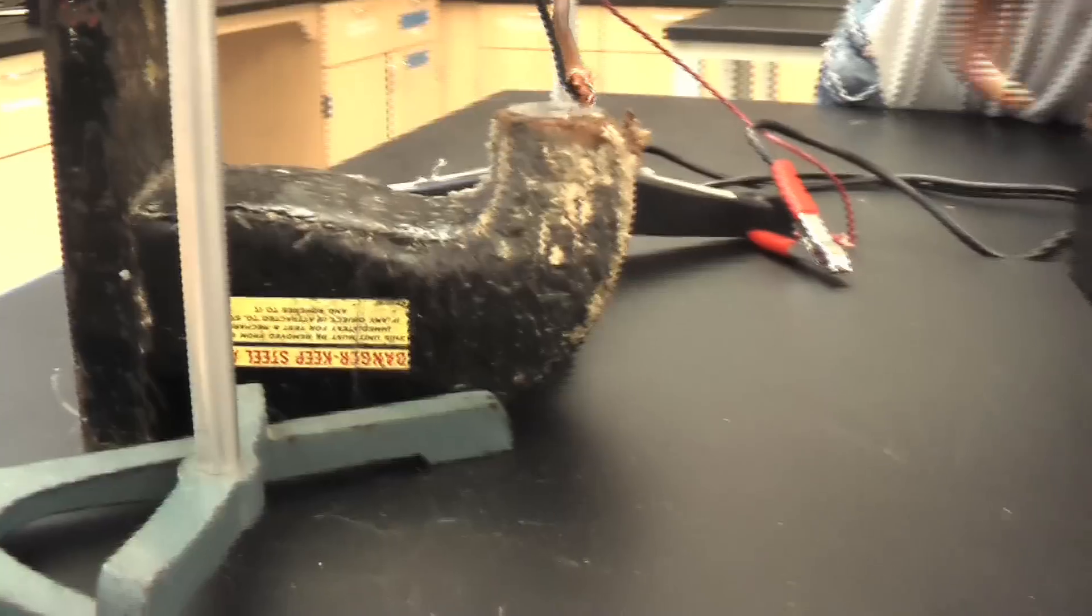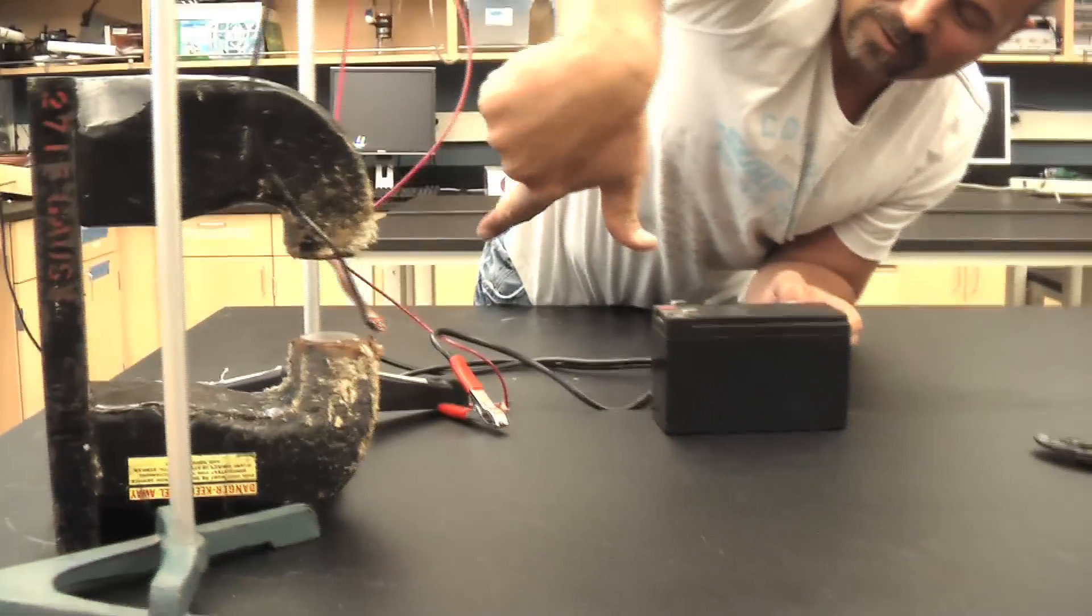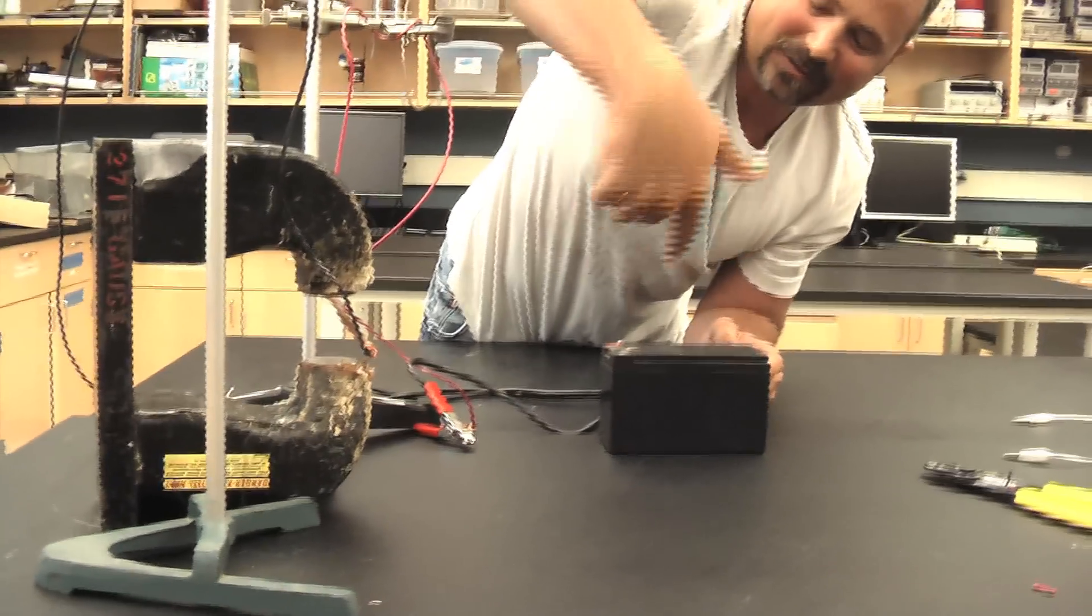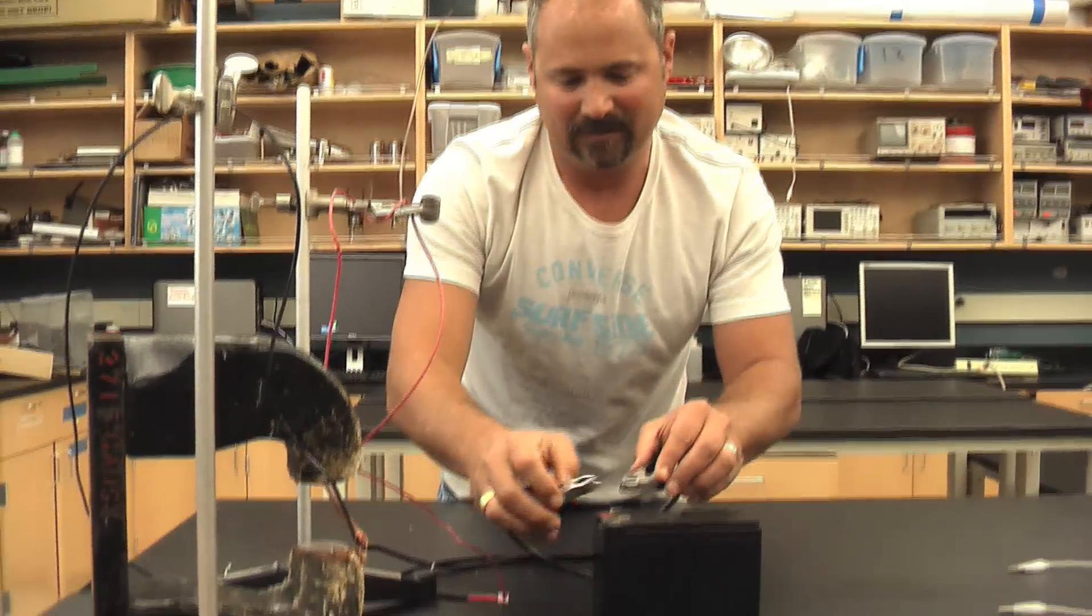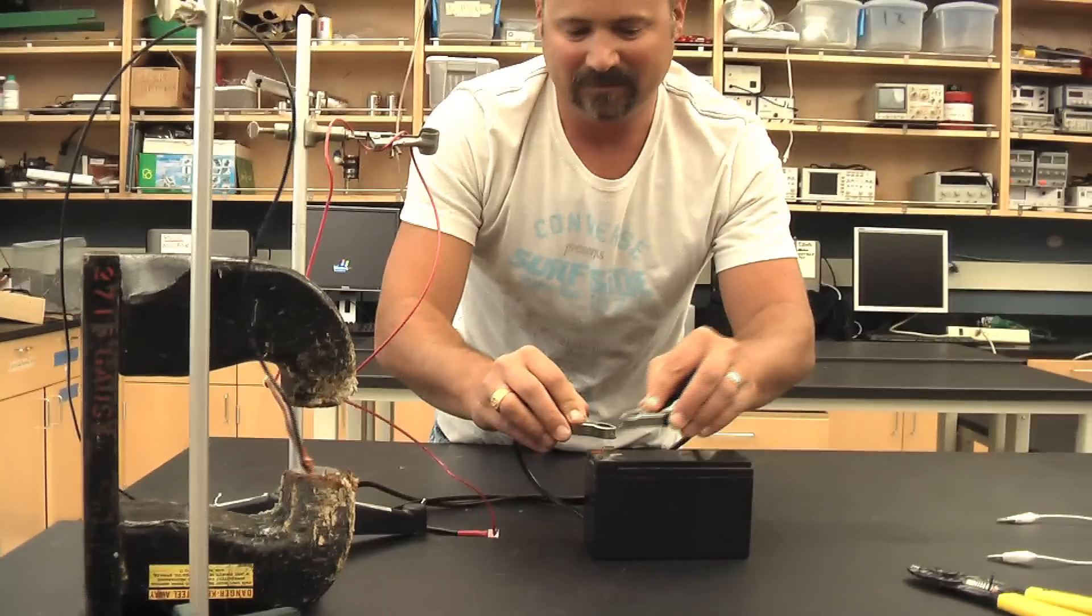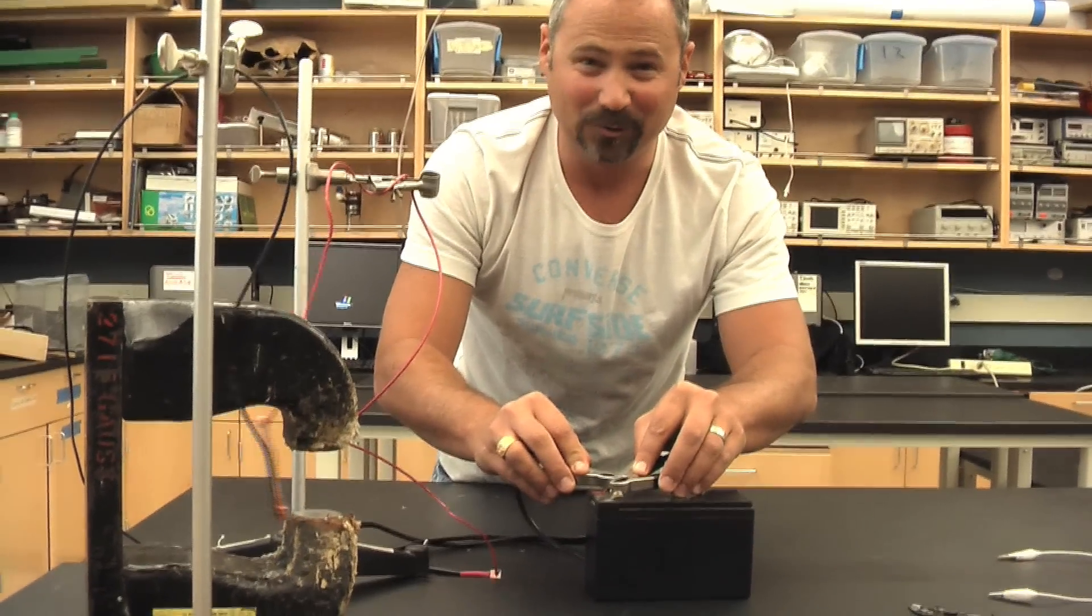current is flowing this way. Magnet field is pointing up. We expect an outward force. And that's what you see. Right-hand rule, simplified.